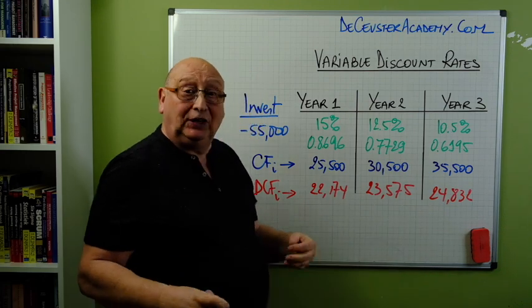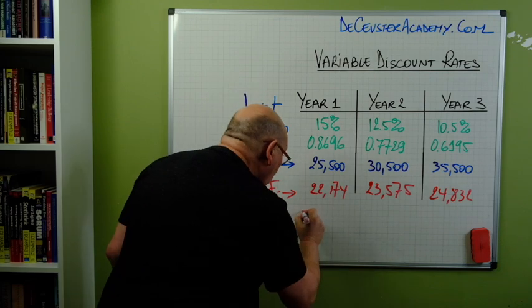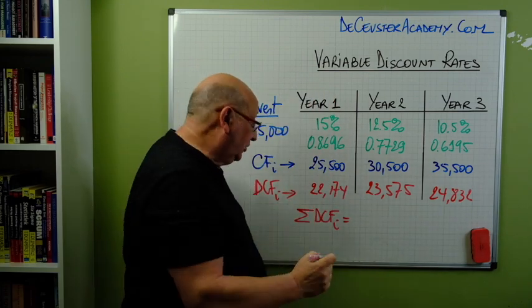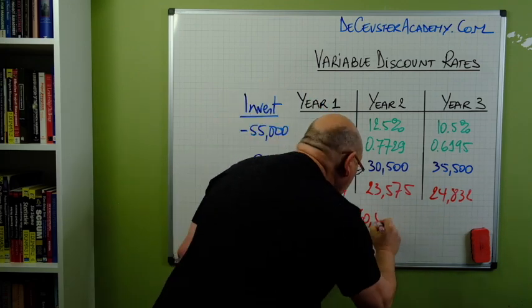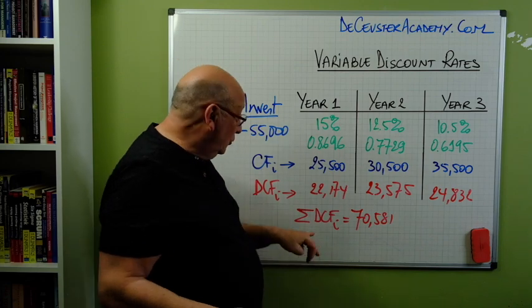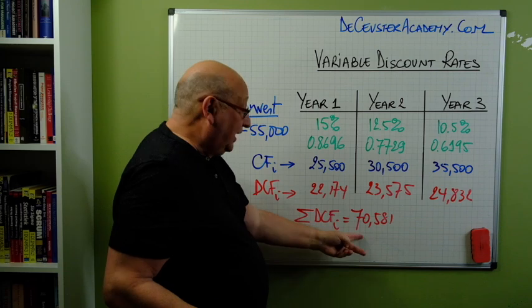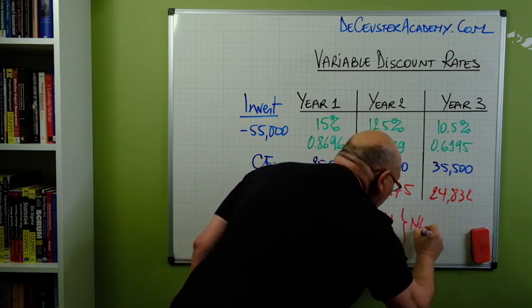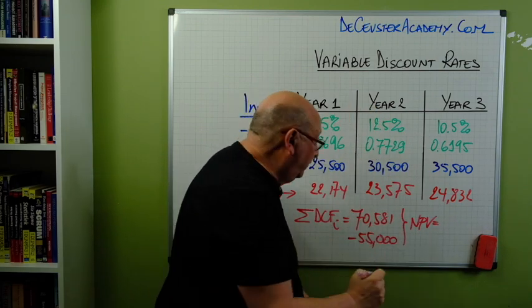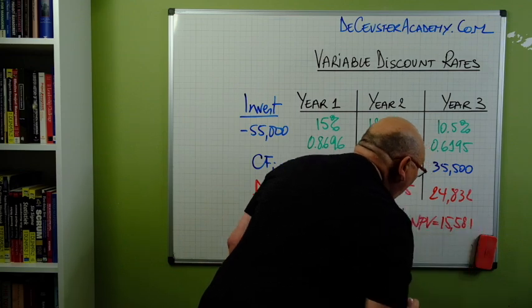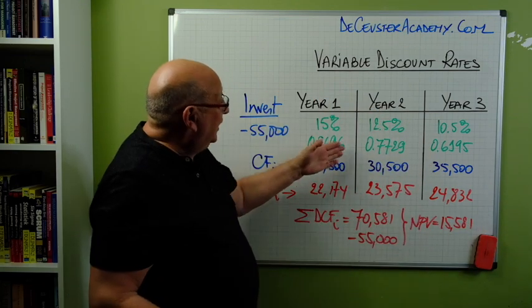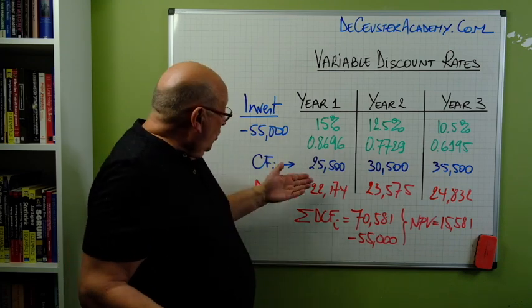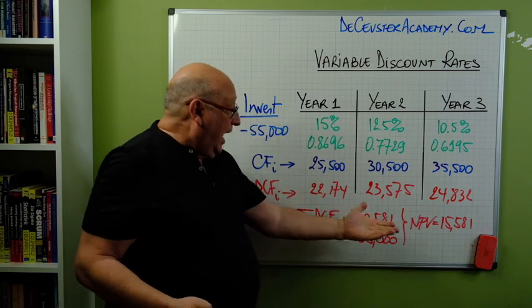What we want to calculate now is the sum of the discounted cash flows, which is the sum of those three values: 22,174 + 22,575 + 24,832, giving us 72,581. To calculate the net present value, I subtract the investment of 55,000, so minus 55,000, which gives us a net present value equal to 15,581.